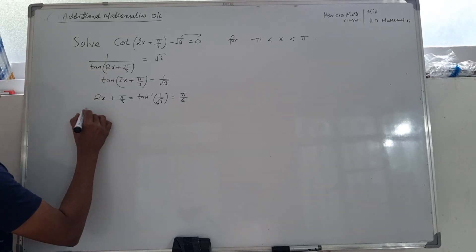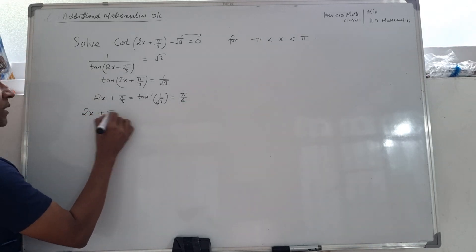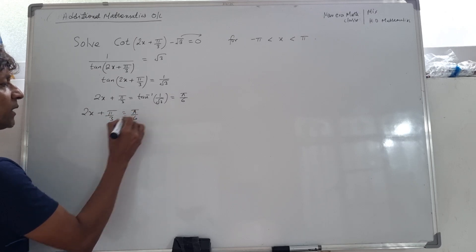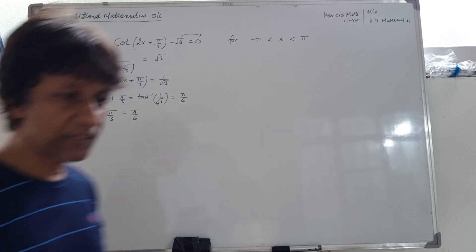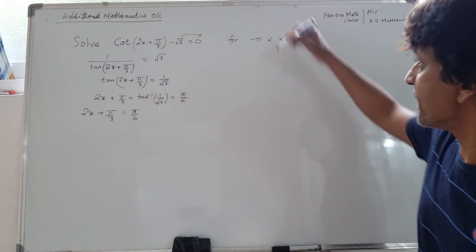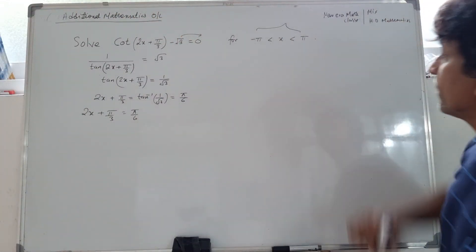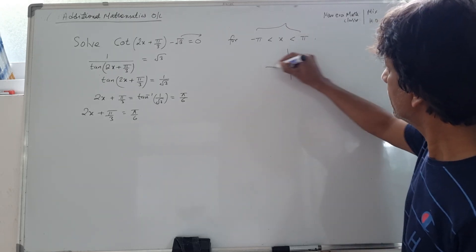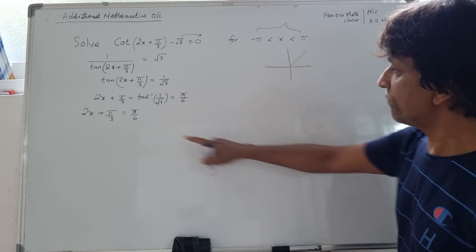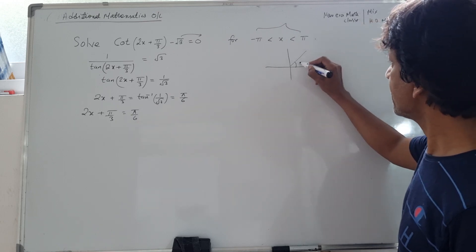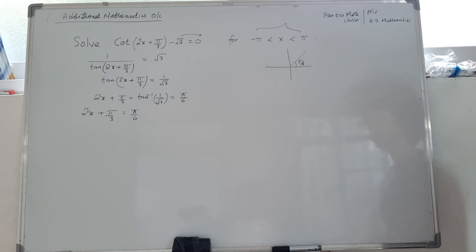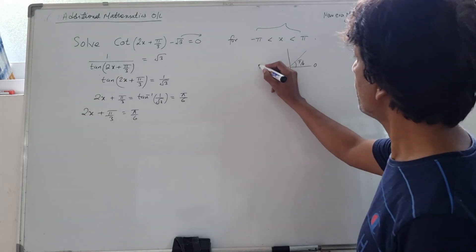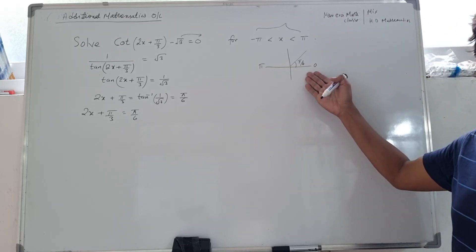From here we have 2x + π/3 = π/6. Now where do we go from here? Remember the domain has been given. The basic angle here is π/6, and we're looking for angles between 0 and π for one cycle.